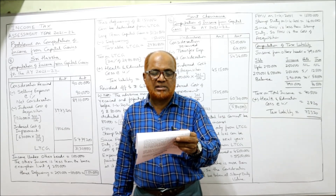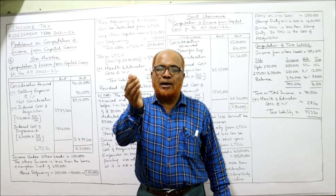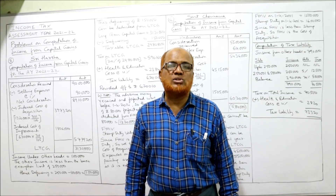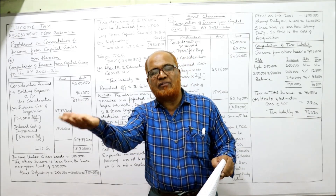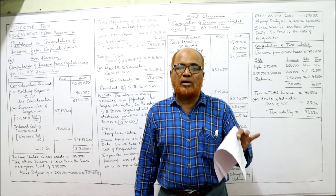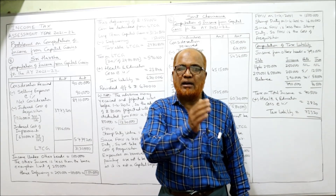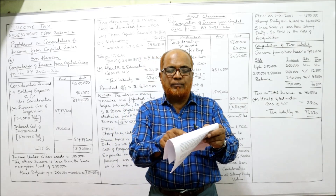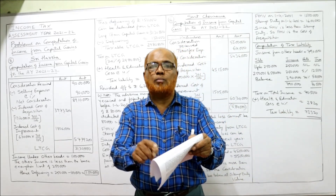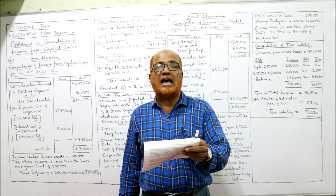Mr. Abraham failed to pay the balance amount and consequently the advance amount is forfeited. The Income Tax Act says: if the advance amount is forfeited before 1-4-2014, then this advance forfeited should be deducted from the cost of acquisition. If the amount is forfeited after 1-4-2014, then this advance forfeited is taxable under income from other sources. In our problem, this advance was forfeited in 1995 — that means before 1-4-2014 — so Rs. 80,000 will be deducted from the cost of acquisition.